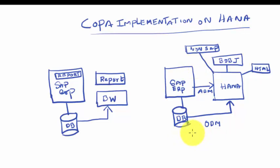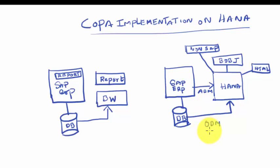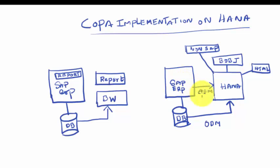You can also bring data directly from the transaction database into HANA using a replication tool — that becomes the operational data mart. The difference between the operational data mart and the agile data mart is that in the operational data mart you don't have the semantic information available in the ERP system, so you are talking to raw tables. In the agile data mart, you are talking to semantically rich tables and hence the modeling efforts will be much reduced.